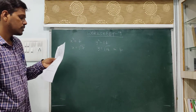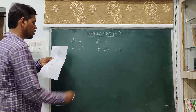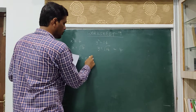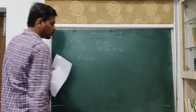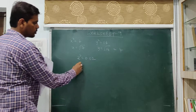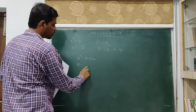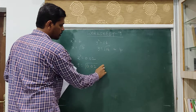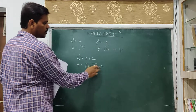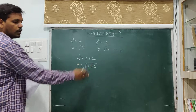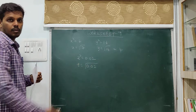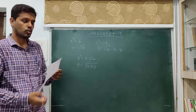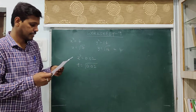Next: z squared is equal to 0.02. z is equal to square root of 0.02. This is again an irrational number, because we cannot extract the square root of 0.02.